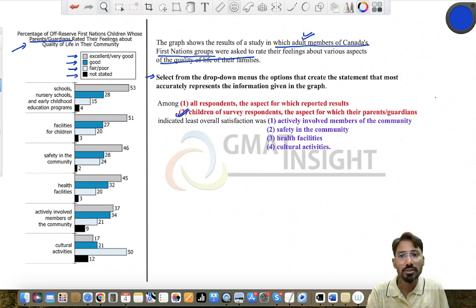So of course it's not about all the respondents—that's slightly vague—whereas it will be very much confirmed if you chose the second one. Among the children of survey respondents, because all the guardians are responding to the survey, the aspect for which the parents or guardians indicated least overall satisfaction.